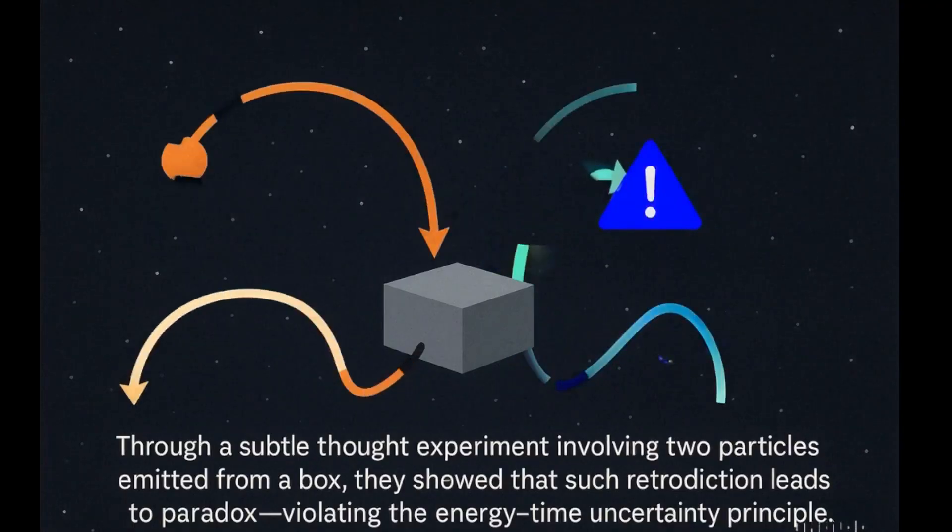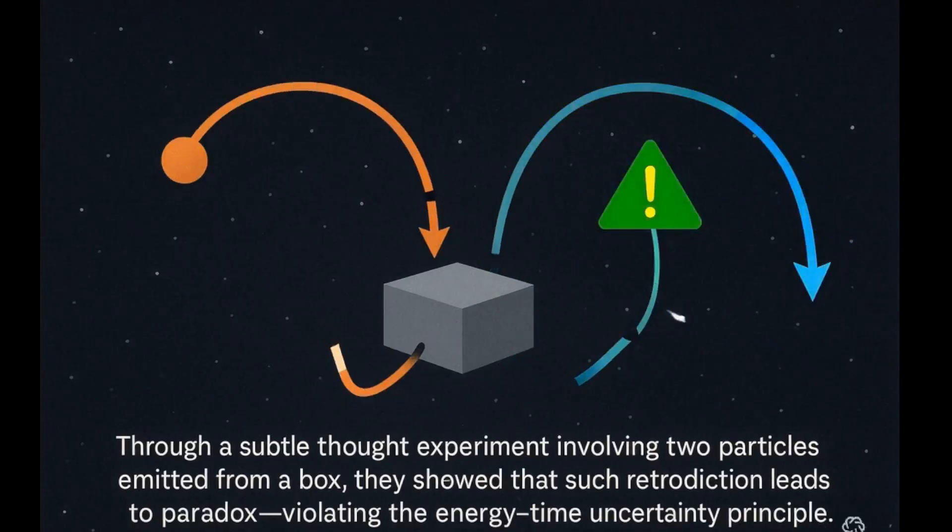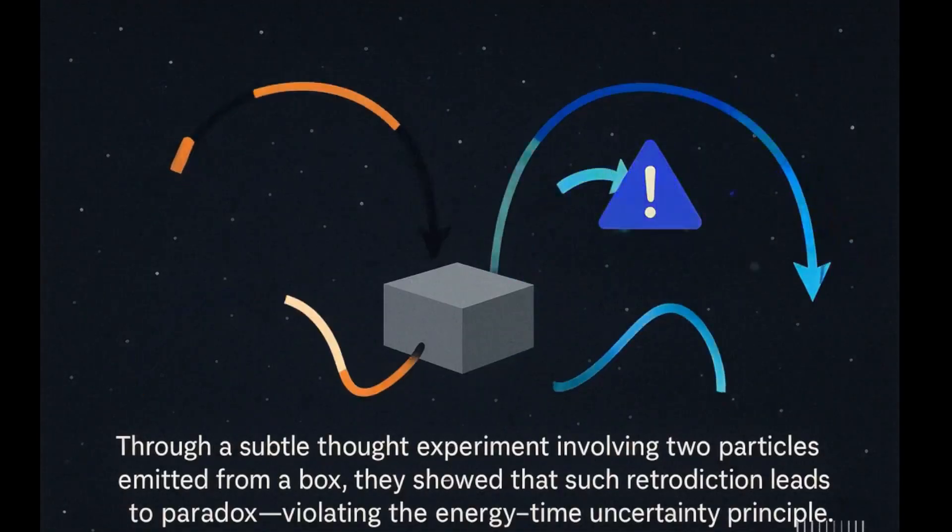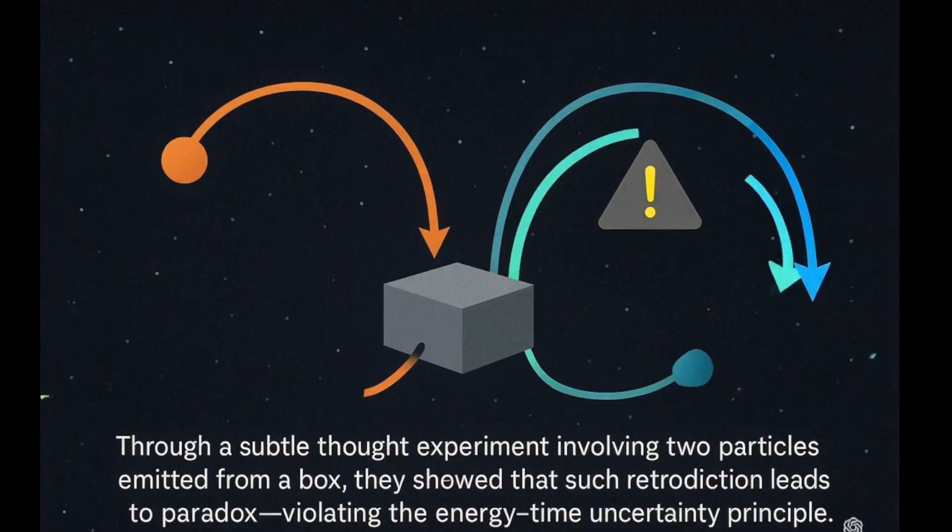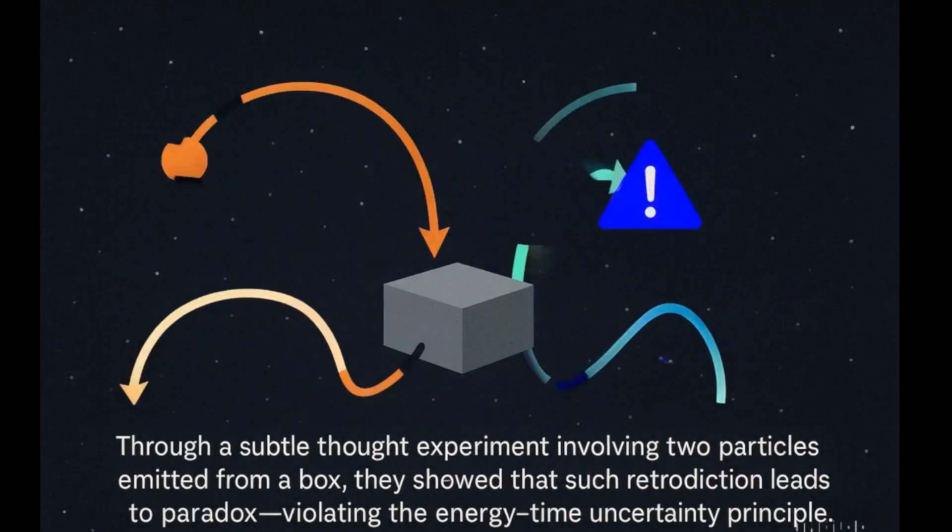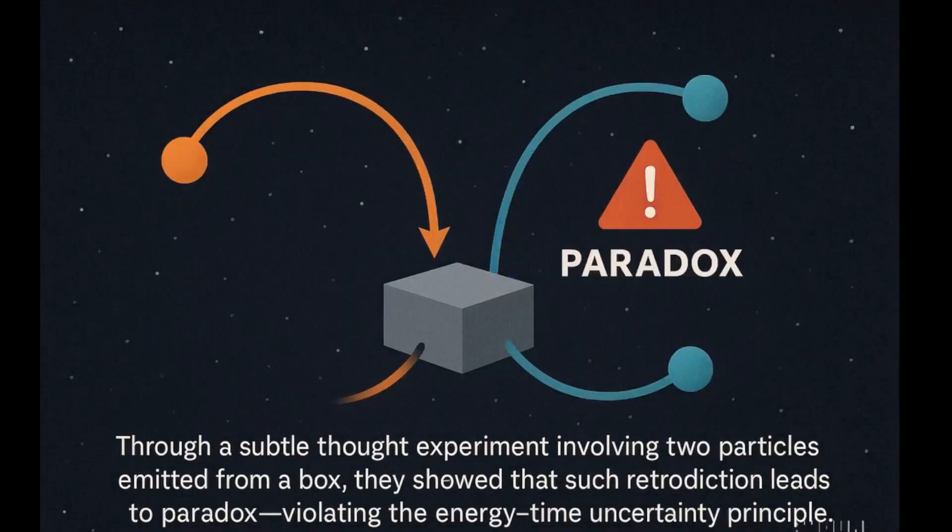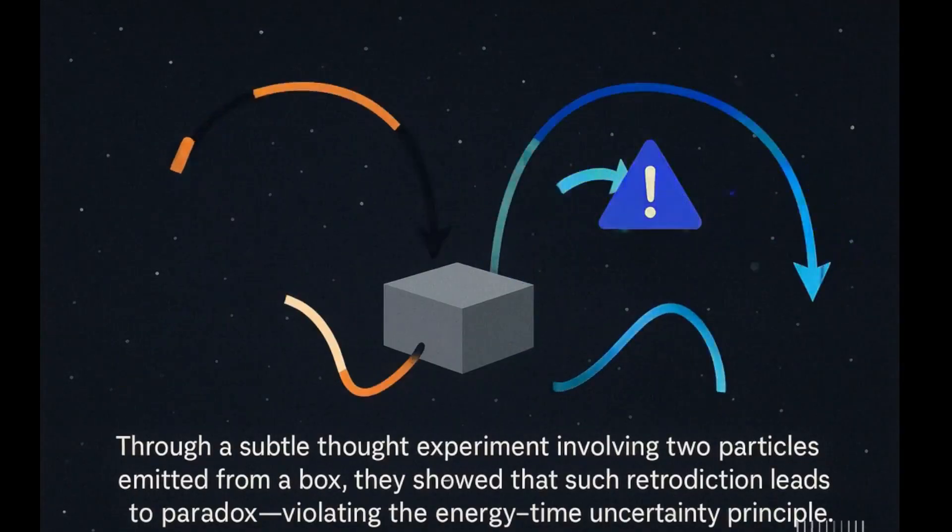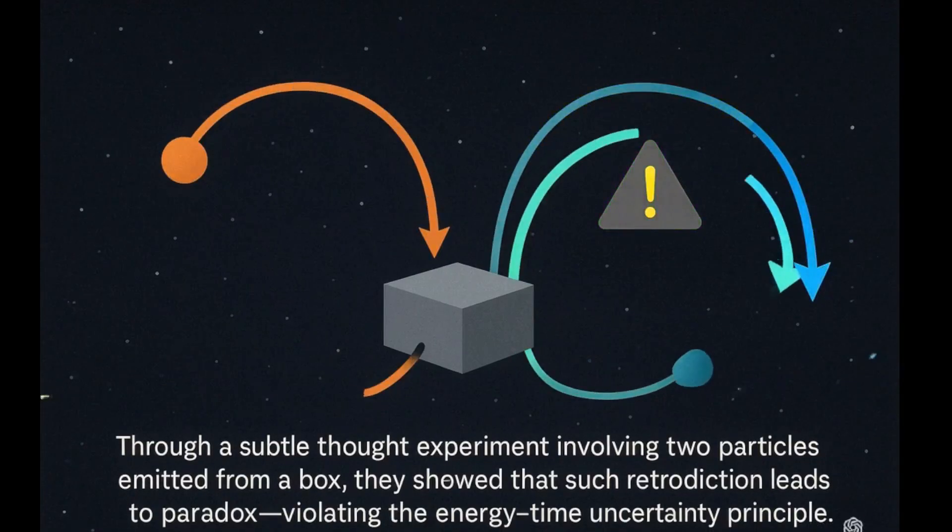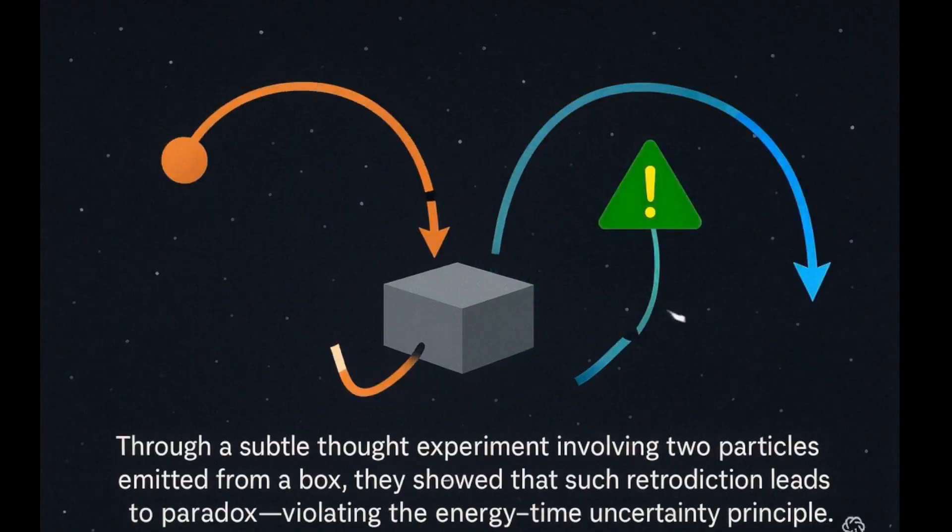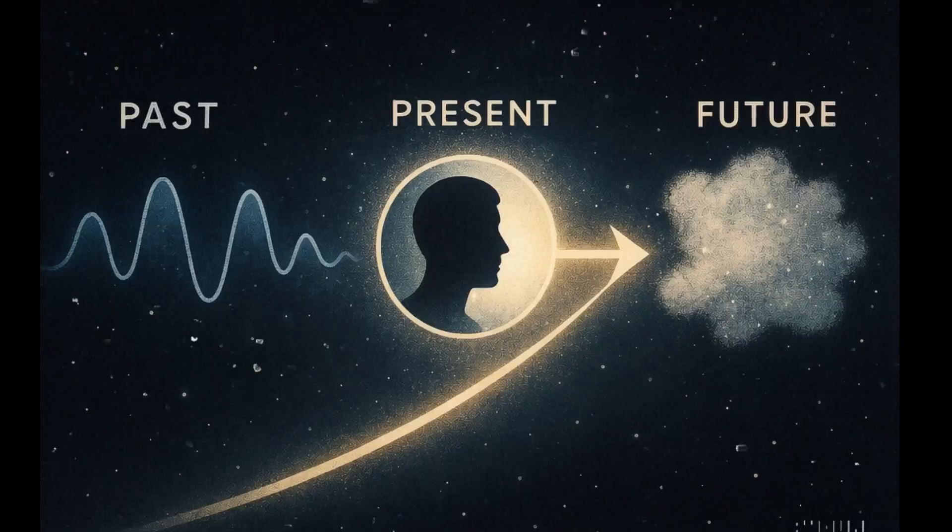But their thought experiment revealed something far more radical. Using a simple setup, two particles emitted from a box, they showed that even the past becomes paradoxical when examined through the lens of quantum mechanics. The observer, they argued, could seemingly use measurements from the first particle to determine both the energy and arrival time of the second. But this would violate the energy-time uncertainty principle.